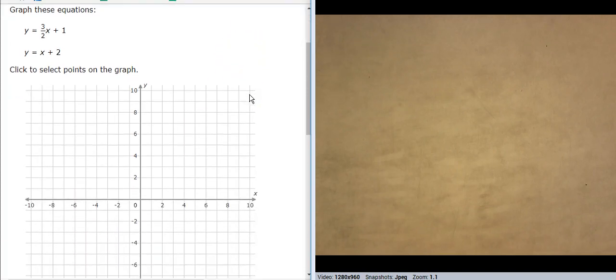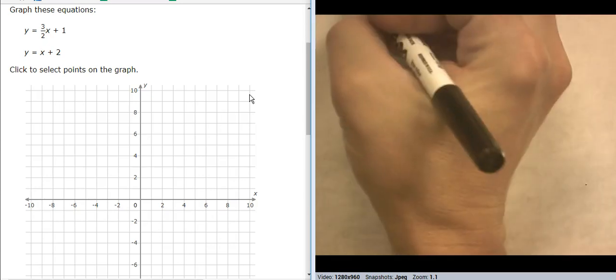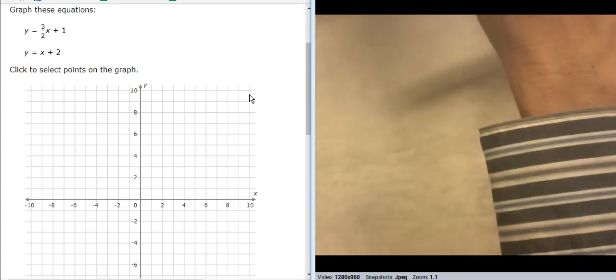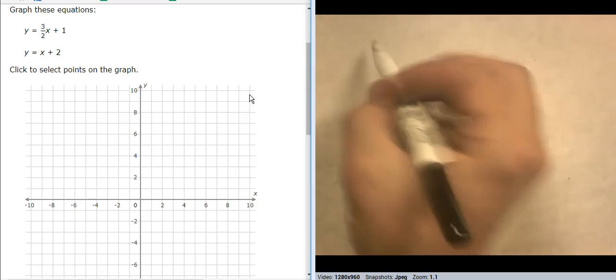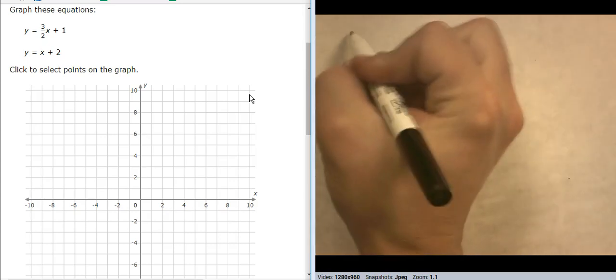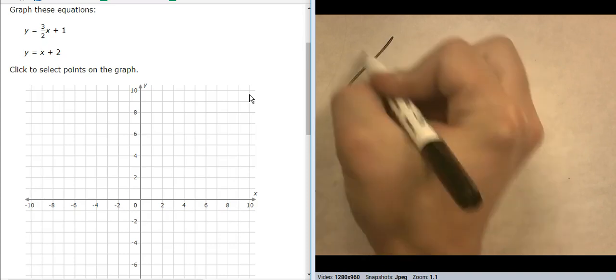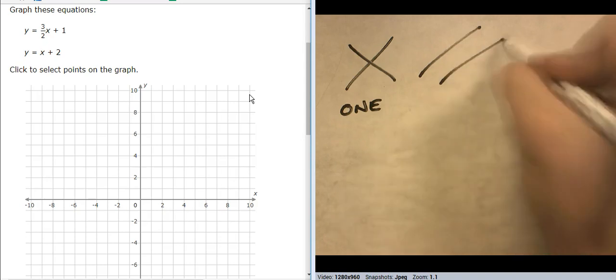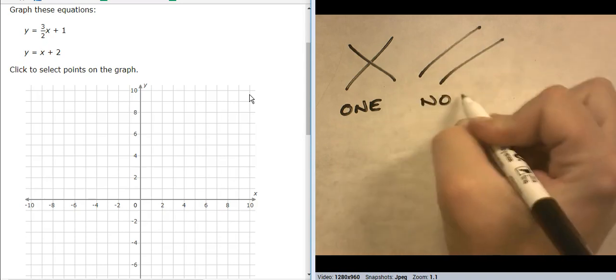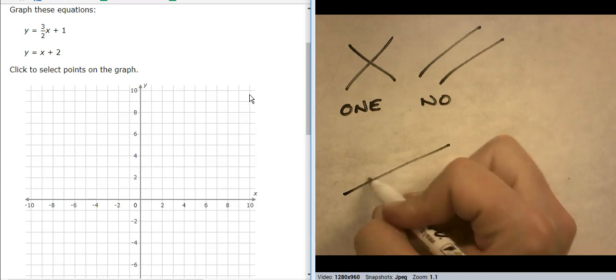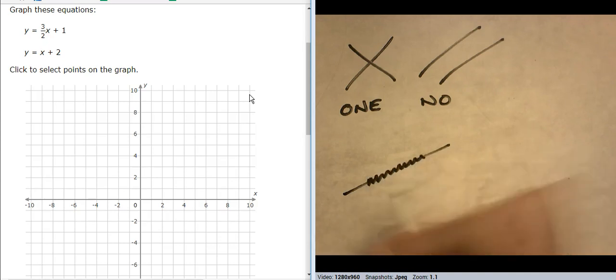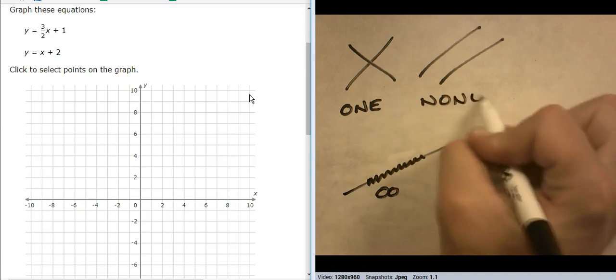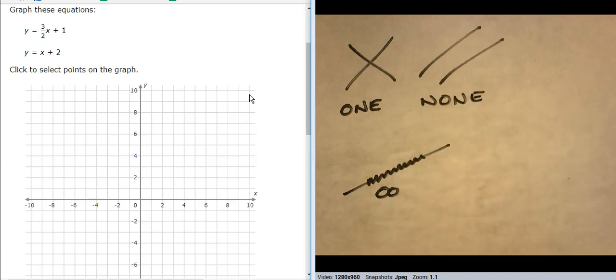So let's look at the three possible things that could happen. If I have a system, I could have two lines that cross, that would be one solution. If I have two parallel lines, that would be no solution. And if I have lines that are right on top of each other like this, that would be infinite solutions. So one, none, or infinite. Those are the possibilities while I'm doing these.